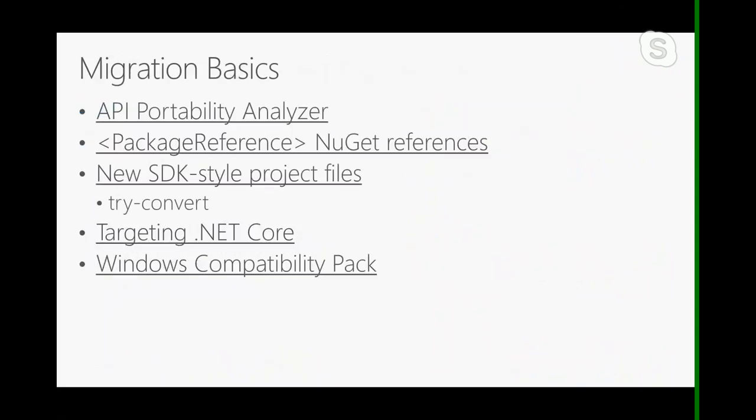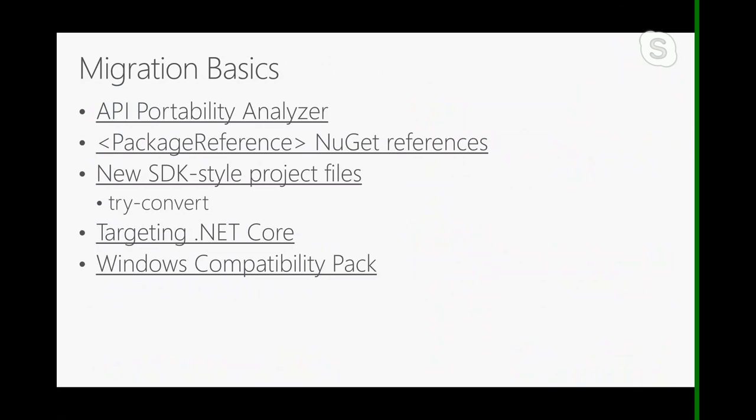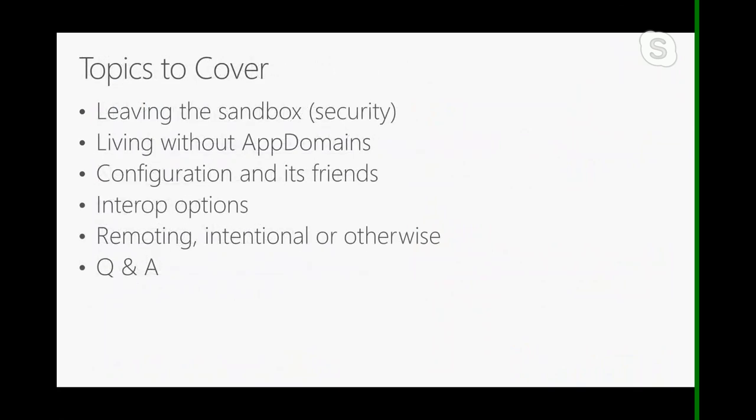This talk is called Beyond the Basics. Here are the things I consider the basics that have already been covered: using the portability analyzer, updating NuGet references, updating project files, targeting .NET Core, using the Windows compatibility pack. If you haven't seen this stuff, go check out Olya's talk. In many cases, after you've gone through these steps, a lot of .NET applications will just work on .NET Core at that point. But for some, there's a number of features that work differently, so there may be additional work needed depending on the specific application you're porting.